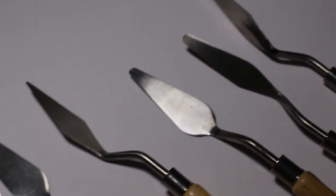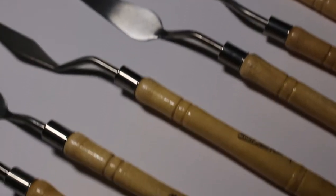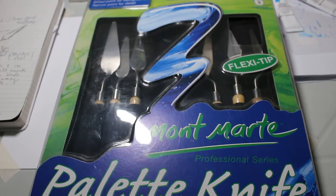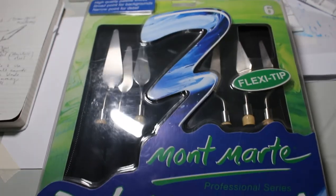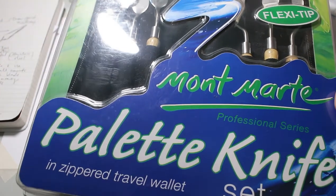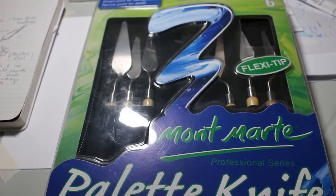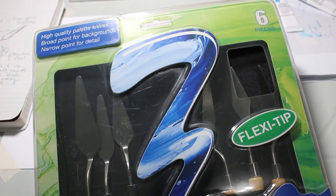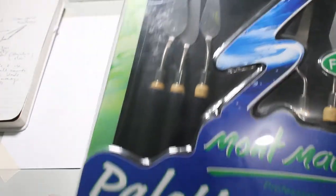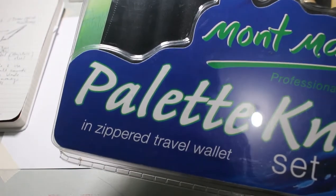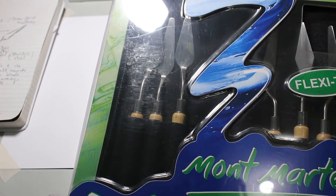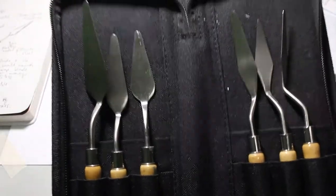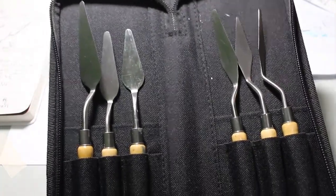Hi guys, welcome back for another video. What I'll be sharing with you now is the features of a palette knife. I got myself a set of palette knives from National Bookstore. It cost around 800 pesos and has six pieces of different sizes and two types of palette knives.